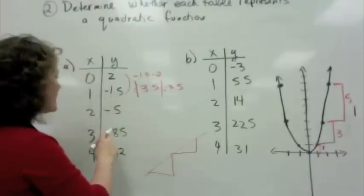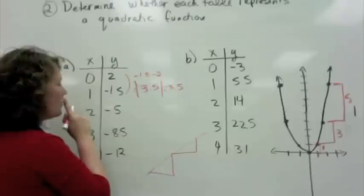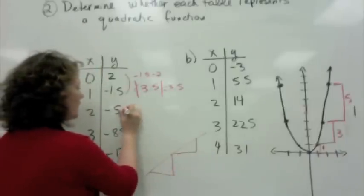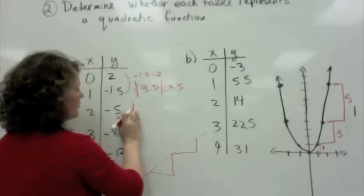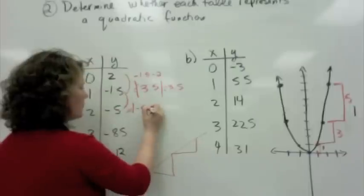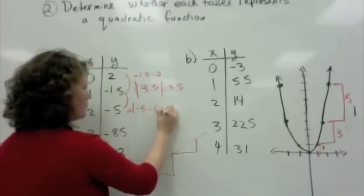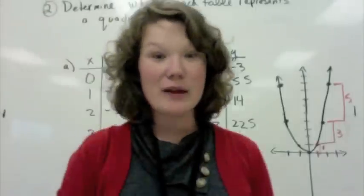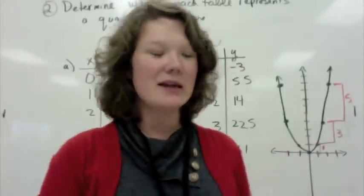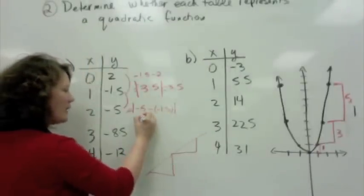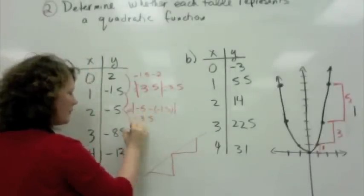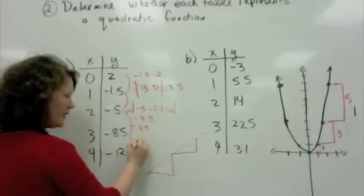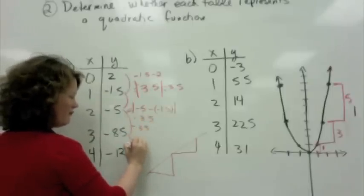What happens if I take the distance between negative 5 and negative 1.5? Negative 5 minus negative 1.5. So guys, basically what we're doing is negative 5 plus 1.5. Guess what? That's negative 3.5, but the absolute value of that would be 3.5. Guess what? The difference here is also 3.5. The difference here is also 3.5.